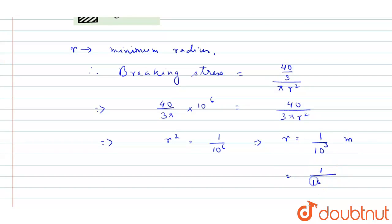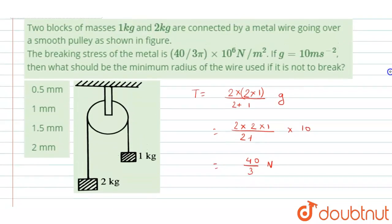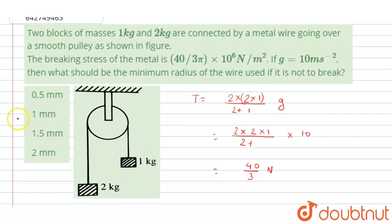1 by 1000 times 1000, that will equal 1 millimeter. So let us now check which option matches our answer. The second option matches with the answer. I hope you like my video, thank you.